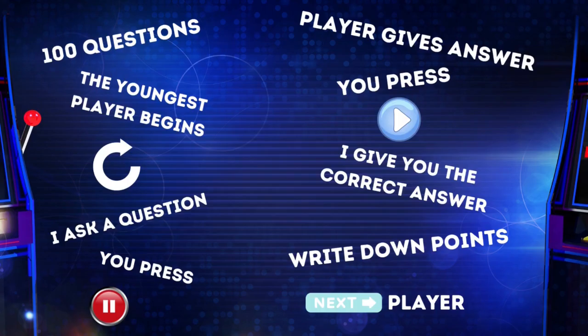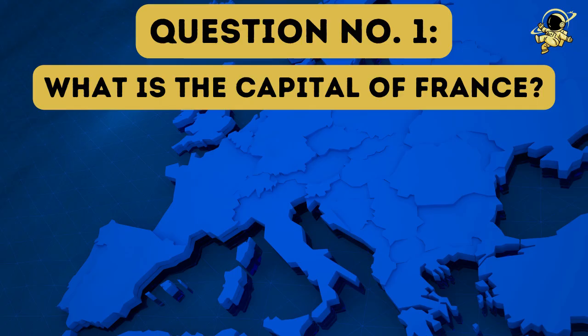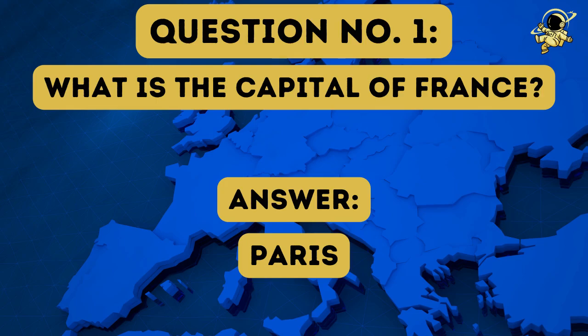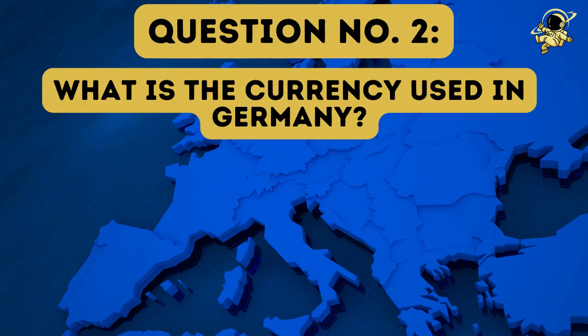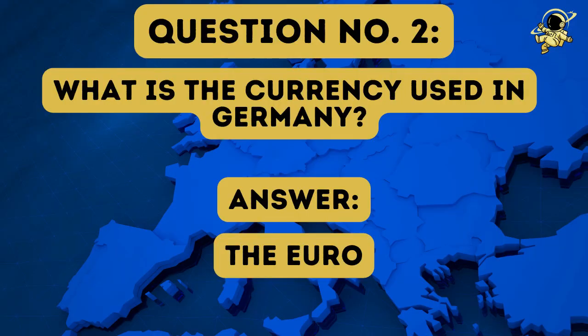And here comes the first question. Question number one: What is the capital of France? This is the point where you should press pause now, so that the player can give the answer. Don't worry, I'm just doing this in the first question, and not in every question coming. The answer to question number one is Paris. That was probably a very easy start for you all. And then we come to question number two: What is the currency used in Germany? And the answer to question number two is the Euro.